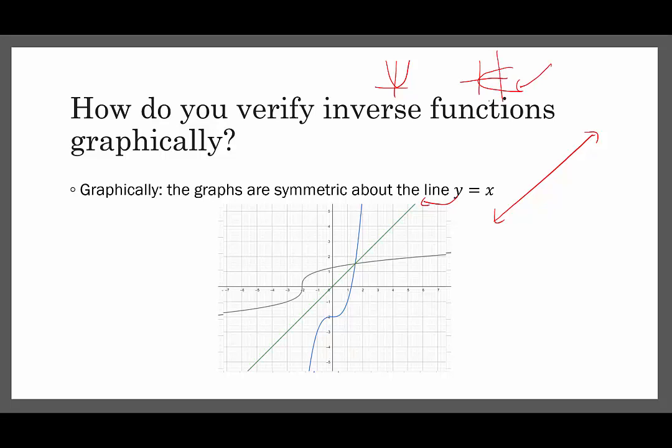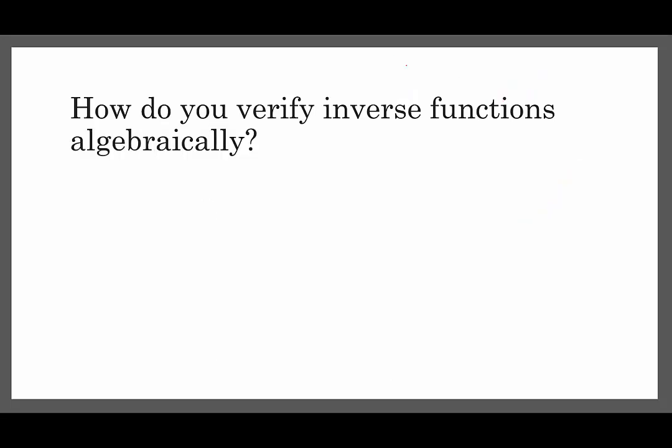What sometimes we do for something like parabolas that don't have inverse functions, is we might just look at a piece that would have an inverse function. So we might only look at zero to two, let's say. And if we just look at this piece here, there would be an inverse function to go with that. So that's not to say we can't do anything with quadratics or anything that doesn't have an inverse function itself. We can either just look at the inverse or we can look at just a fraction or a piece of the graph that would have an inverse function.